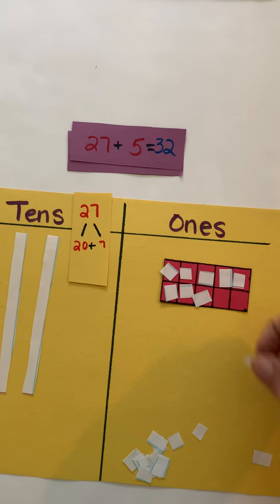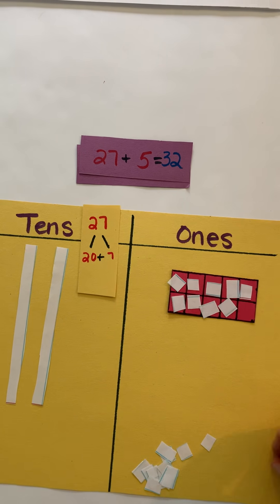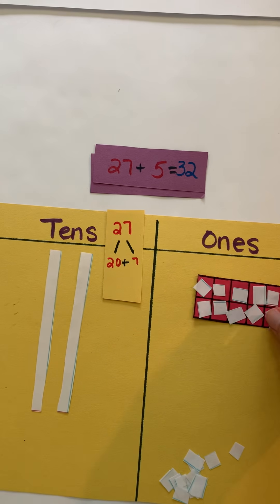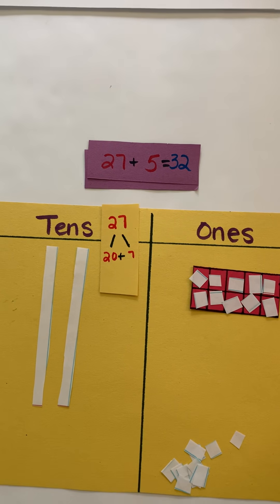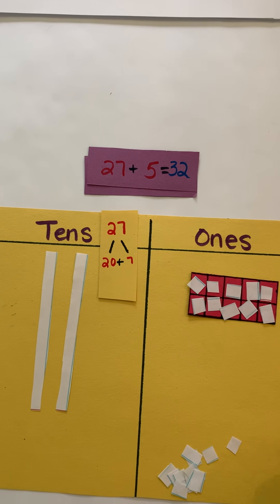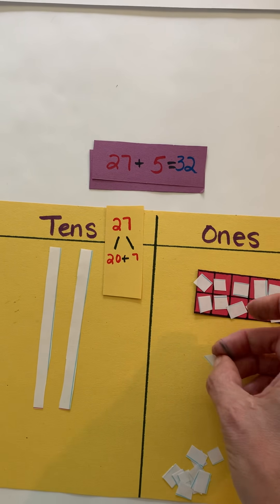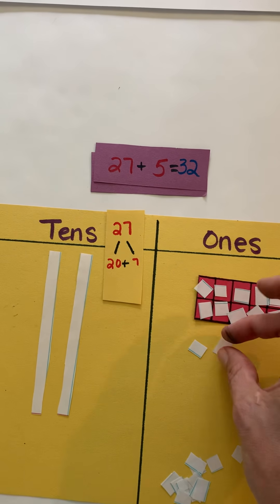So 1, 2, 3, and so I can see I've made a group of 10, but I still haven't finished adding all my 5 ones, so 4, 5.